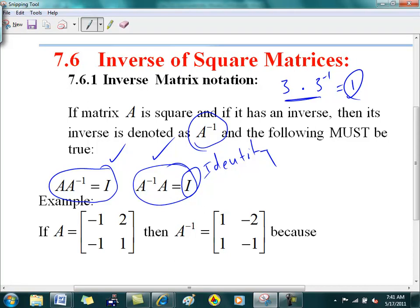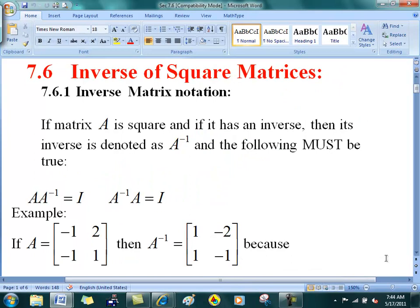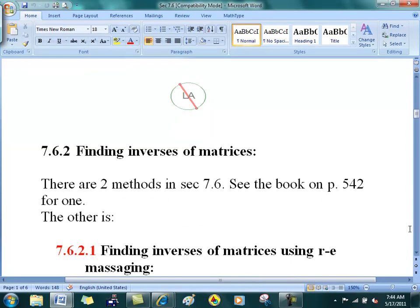If only one is true, then it's not an inverse. It's a funky matrix. So my claim to you is that these two are inverses of each other. Prove it. How are you going to do it? Just do it.